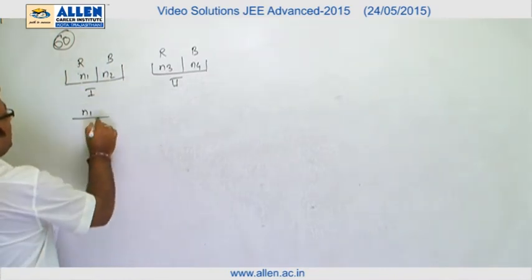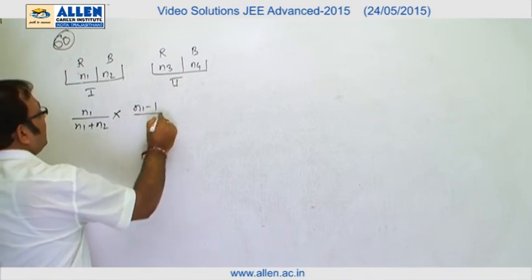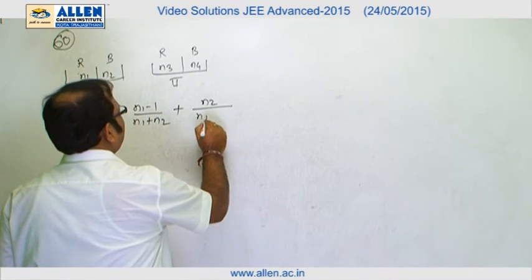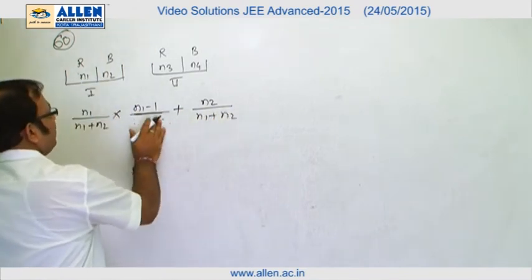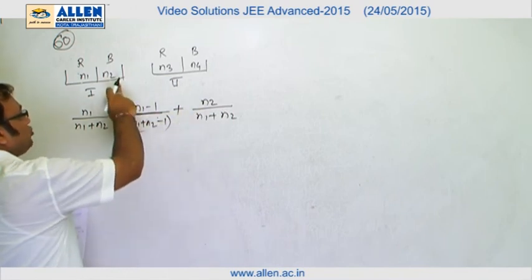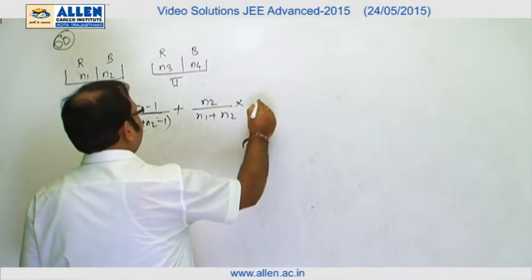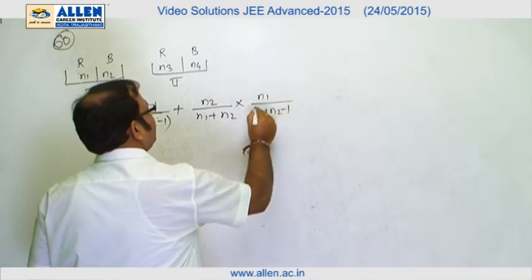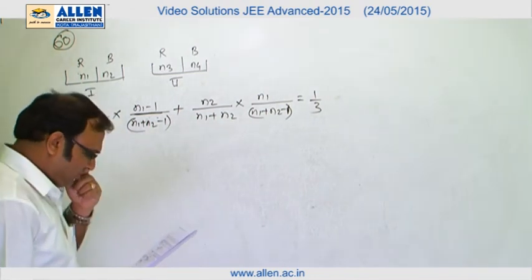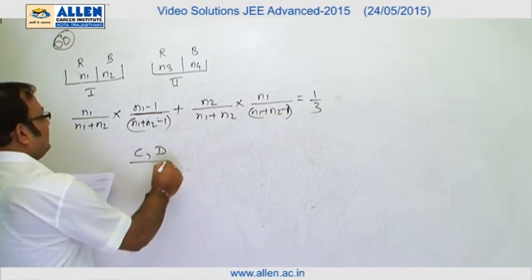In the first draw, red ball probability is n1/(n1+n2). Given that red was drawn, in the second draw red ball probability becomes (n1−1)/(n1+n2−1). Or, if black was drawn first — probability n2/(n1+n2) — then in the second draw red ball probability becomes n1/(n1+n2−1). Setting this total probability equal to 1/3 gives us the required relation. Checking the options, we can see that options C and D satisfy this relation.